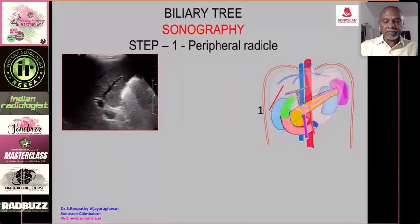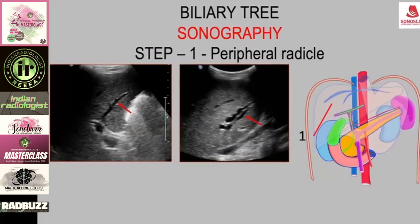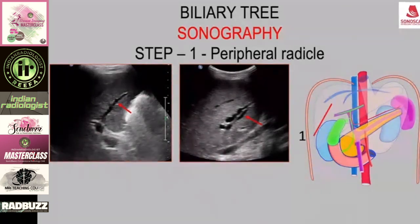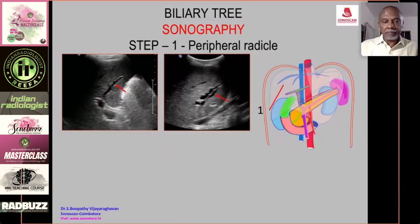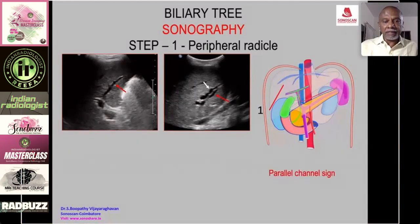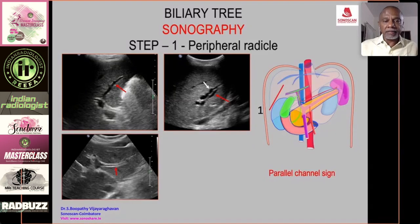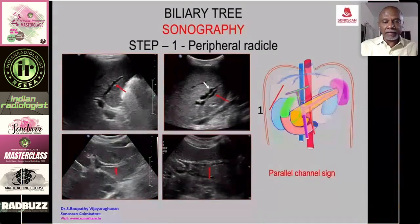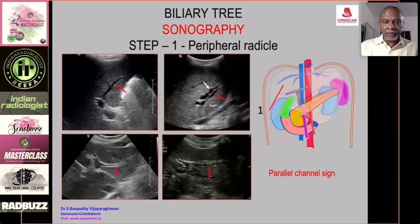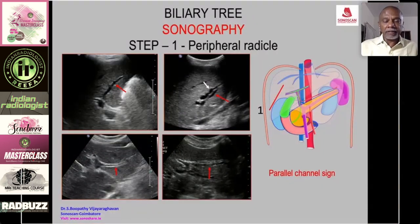Step one — the peripheral radical: scan the periphery of the liver. Normally you will see a branch of the portal vein as a single tubular structure. The peripheral radical of the bile duct accompanies it but is not normally seen. When the bile duct is dilated, it courses parallel to the portal vein branch — this is called the parallel channel sign, or double barrel gun sign, indicating dilated bile ducts.